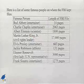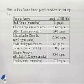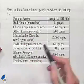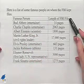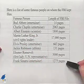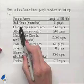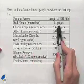Here's a word problem where we're going to use a Venn diagram to solve. Here's a list of some famous people on whom the FBI kept files. We have the list of famous people and then the length of the FBI file listed to the right. Bud Abbott, who was an entertainer, had 14 pages. Charlie Chaplin, an entertainer, had 2063 pages.